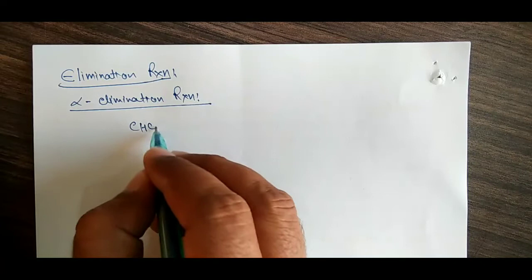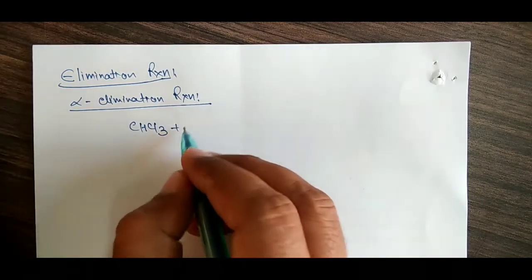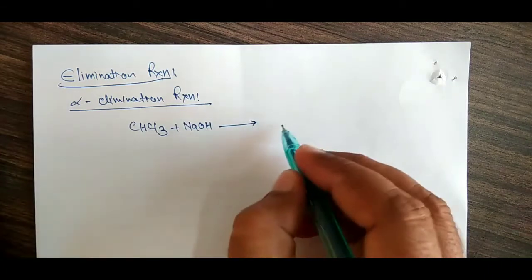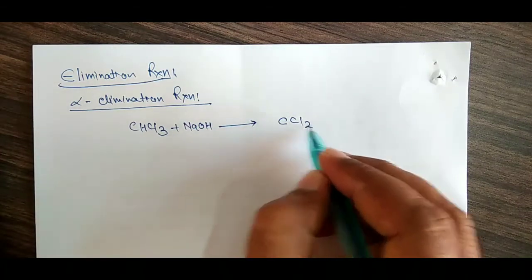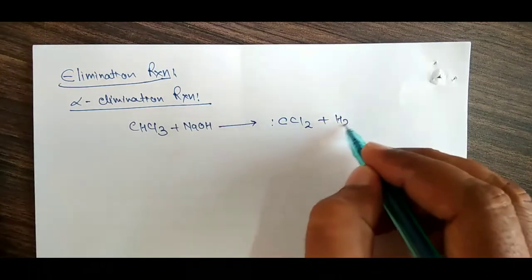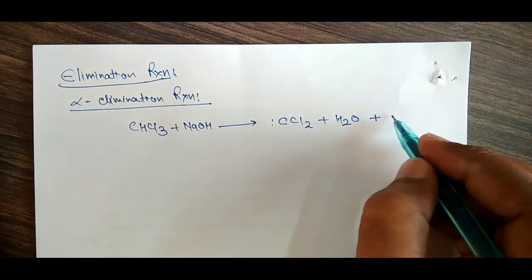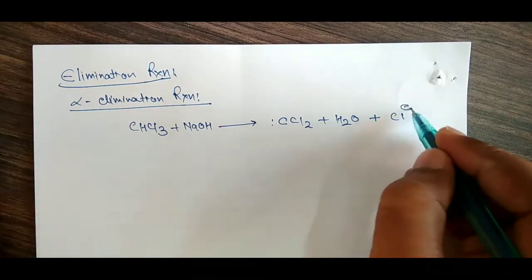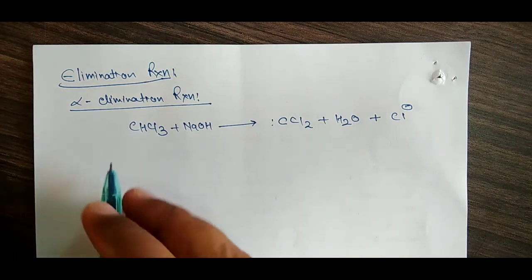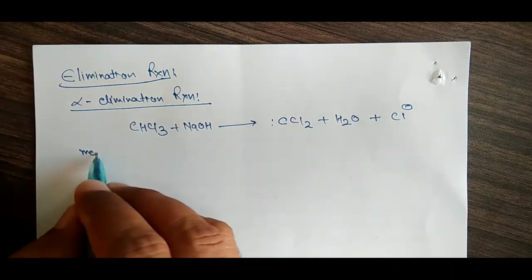What is the alpha elimination reaction? We have here CHCl3, and if we add here NaOH, we will get here CCl2, which is called dichlorocarbene, with loss of water and Cl negative. This is a type of the alpha elimination reaction.